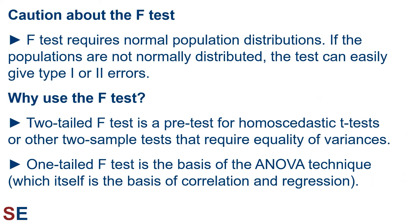Two last points. First, a word of caution: the F-test requires normal population distributions. If the populations are not normally distributed, the test can easily give type 1 or type 2 errors. Even though the F-test is okay as a first check, if we really want to test for the equality of variances, we should do a more complicated variance comparison test. Nevertheless, F-tests are still widely used to compare variances. Second, why do we tend to do F-tests? The two-tailed F-test is a pre-test for homoscedastic t-tests or other two-sample tests that require equal variances. The one-tailed F-test is the basis of the ANOVA technique, which itself is the basis of correlation and regression. Luckily, in the case of ANOVAs, due to the central limit theorem, as long as you have reasonable sample sizes, the normality problem is not as severe.